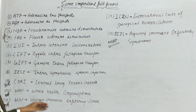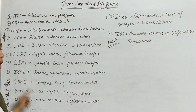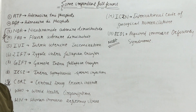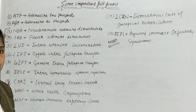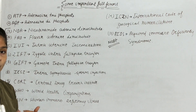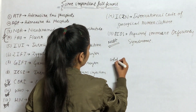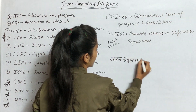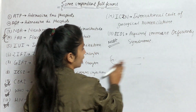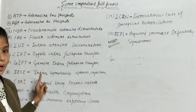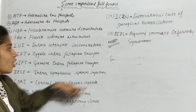If you want to read these full forms in detail, from 5th to 10th number — IUI, ZIFT, GIFT, ICSI — I have studied all these in detail. If you have not seen that, you have a chapter called Janan Swasthiye or Reproductive Health. Check the playlist for the Reproductive Health chapter where I have studied IUI, ZIFT, GIFT, and ICSI in detail.